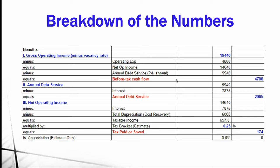That yields a before-tax cash flow of $4,700. Breaking down the annual debt service further: interest from payments is $7,875, which means $2,065 goes toward principal reduction on the loan.